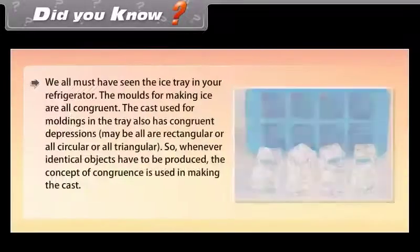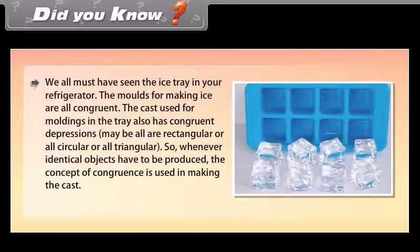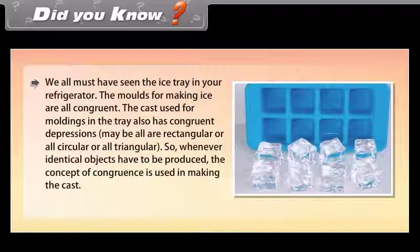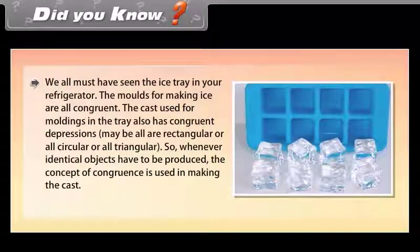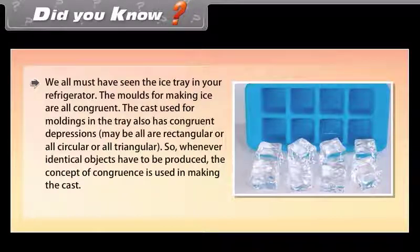Did you know? We all must have seen the ice tray in the refrigerator. Observe that the moulds for making ice are all congruent. The cast used for moulding in the tray also has congruent depressions — maybe all are rectangular, or all circular, or all triangular. So, whenever identical objects have to be produced, the concept of congruence is used in making the cast.